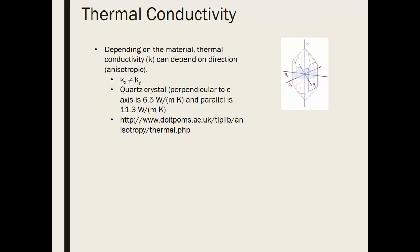Thermal conductivity is typically treated as constant, but special cases exist where it varies. For example, a crystal lattice with different physical structure in different directions will have different thermal conductivities in those directions. In a quartz crystal, the crystal structure differs significantly between directions, so thermal conductivity in one direction may not equal that in another direction.